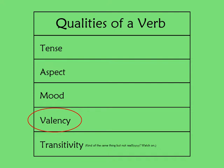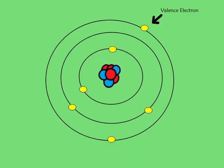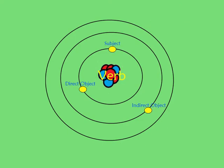To explain verb valency, I'll connect this to a similar idea that you've likely heard if you've taken a science class: valence electrons. It's the same word, and they mostly mean the same thing. Valence electrons are the electrons of an atom that are in the outer shell and participate in chemical reactions. This is also a good way to think about verbs — each verb has a certain valency attached to it, so each electron essentially stands for the participants of the verb.